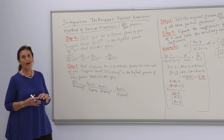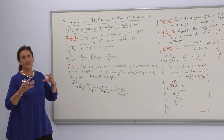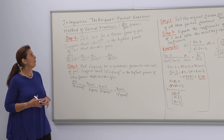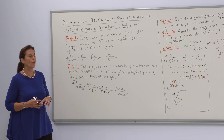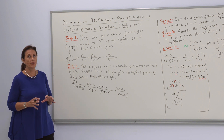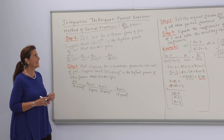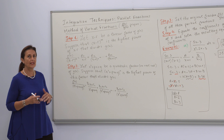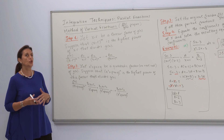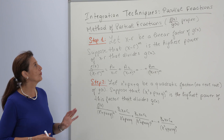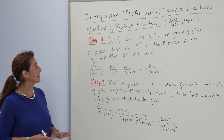When we talk about fractions, it is something like a polynomial f over g. It should be proper, meaning that the power of the numerator should be less than the power of the denominator.